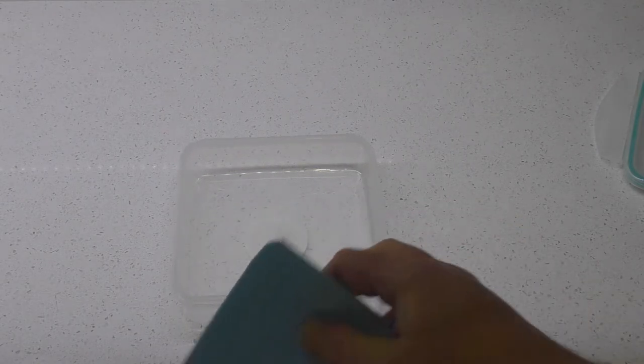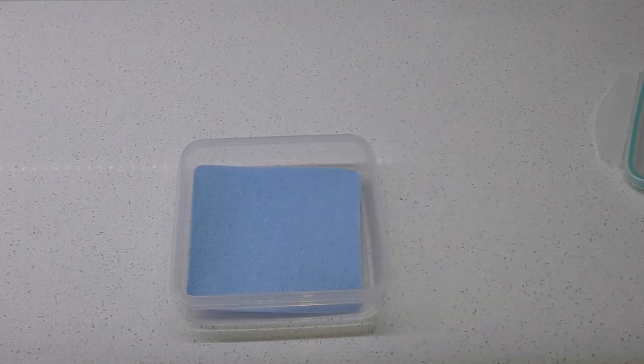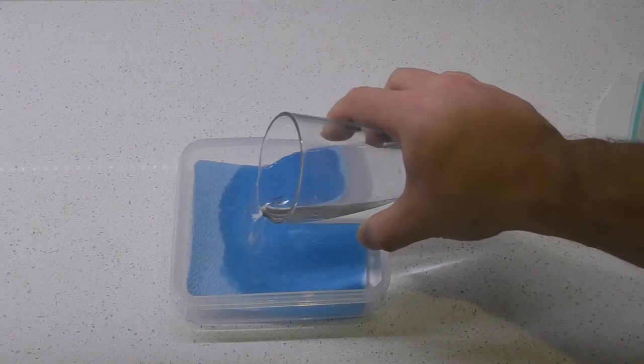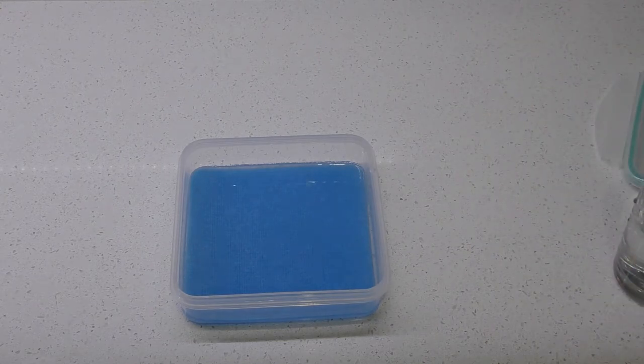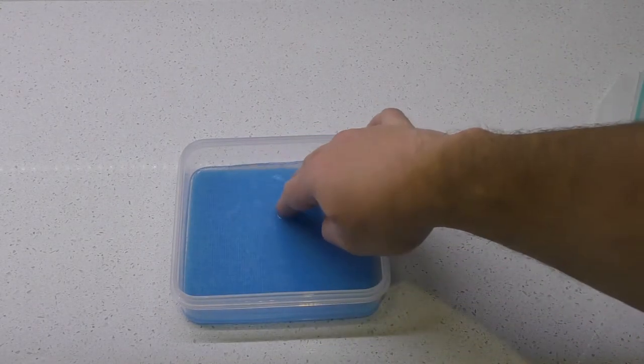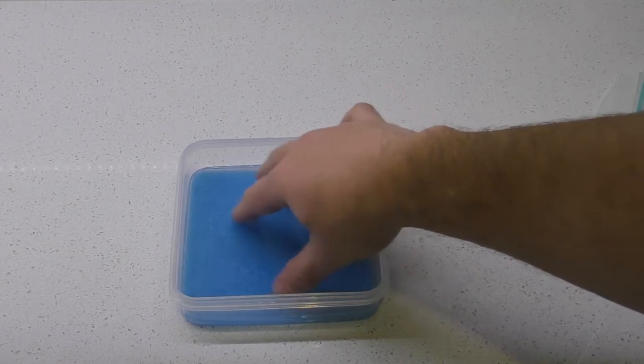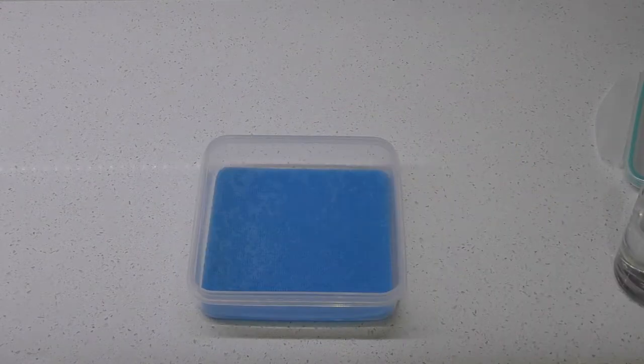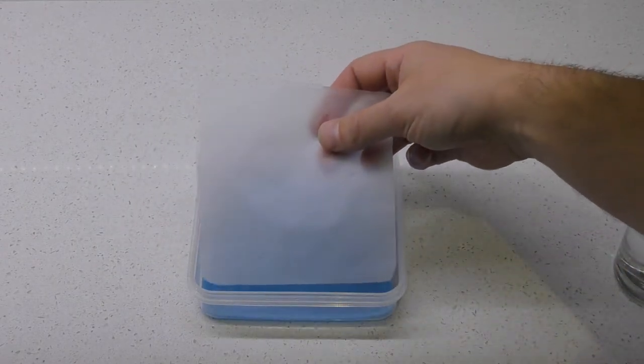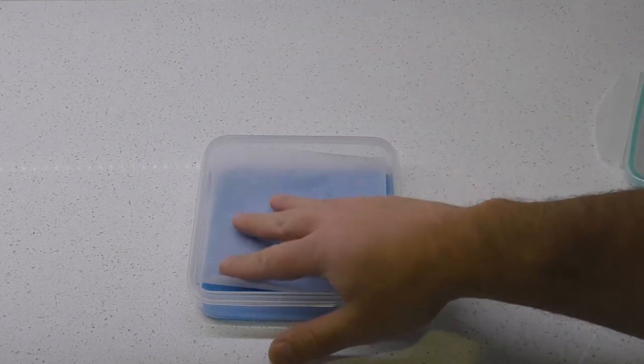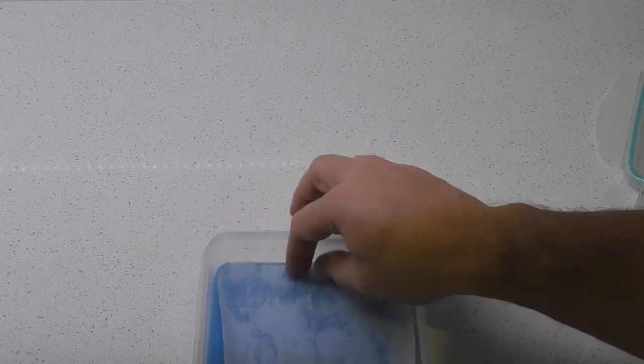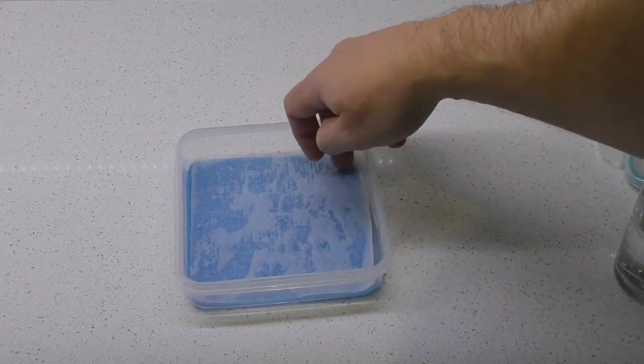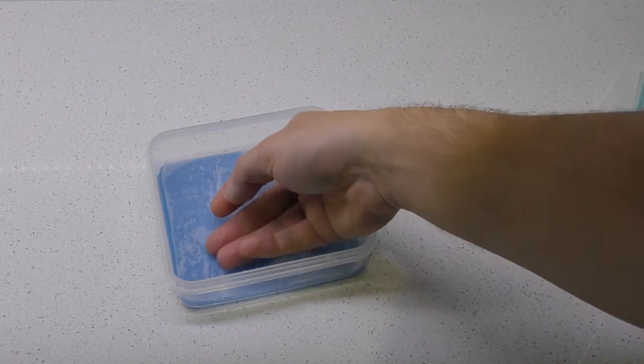Next stage is we take our sandwich tray, put the sponge inside, and then get some water and pour it on. We want to soak the sponge. Don't worry about putting too much in because we can always take it out. Just make sure the sponge is well soaked, it's absorbed as much water as it's going to absorb, and then pour out the excess.